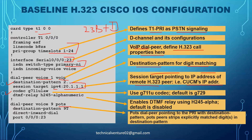You also configure 'codec g711ulaw' on the VoIP dial peer - the default codec is G729 but you can change it to G711 mu-law. Then 'dtmf-relay h245-alphanumeric' enables DTMF relay using H245 alphanumeric signaling; this is disabled by default.